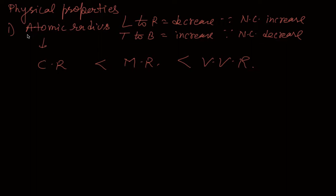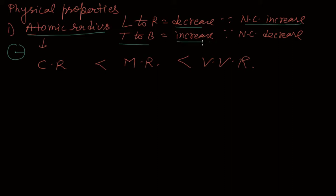Hello my dear students. Now physical properties - first is atomic radius, that is atomic size, the size of an atom from the center of the nucleus to the outermost shell. As you know from the 10th standard, moving from left to right, size decreases because nuclear charge increases. When coming from top to bottom, size increases because nuclear charge decreases.